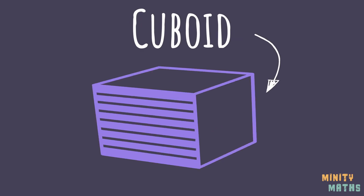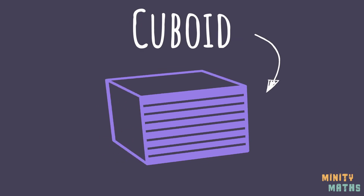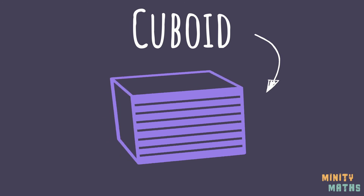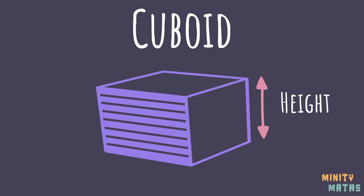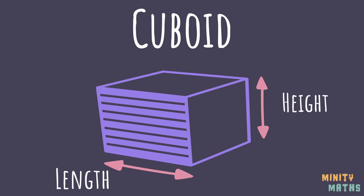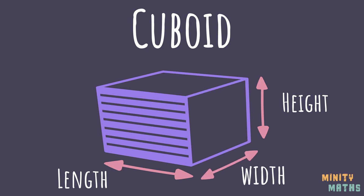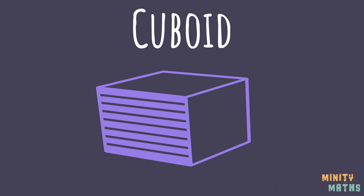A cuboid is a three-dimensional shape. It has a height, a length and a width. Each face of a cuboid is a quadrilateral, specifically a rectangle. The angle at each vertex is 90 degrees.